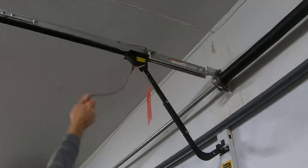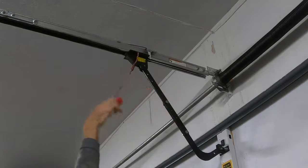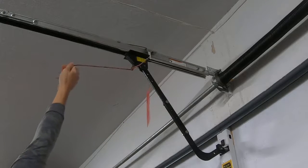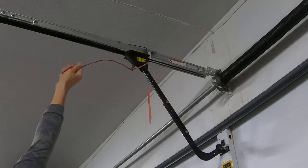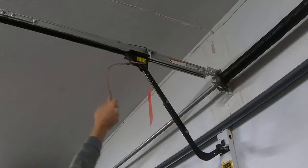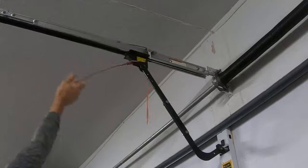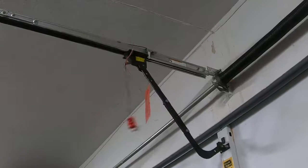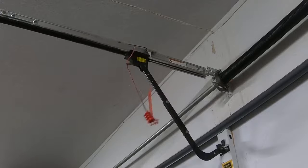Now to re-engage that, you have to pull this cord at a straight angle—give it a pretty good pull. It should engage like that, and you can try to pull on your garage door to see if it'll move or not.